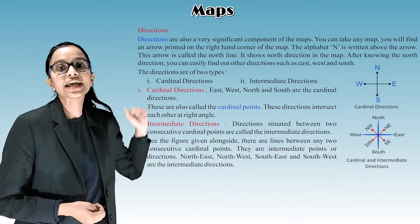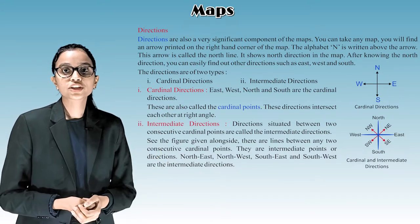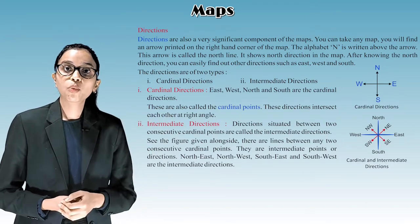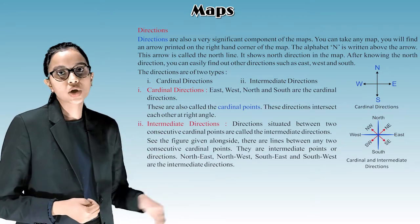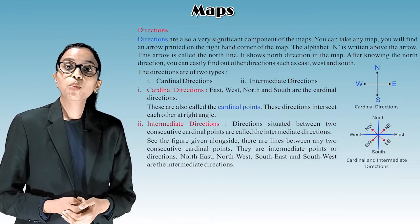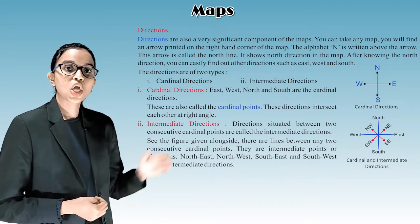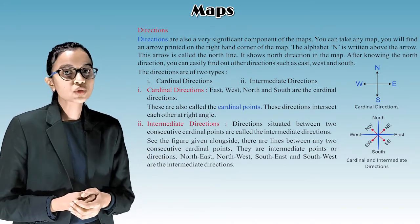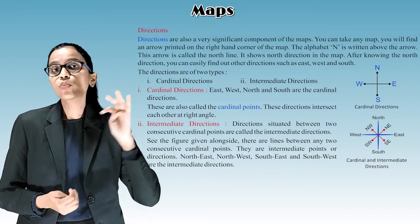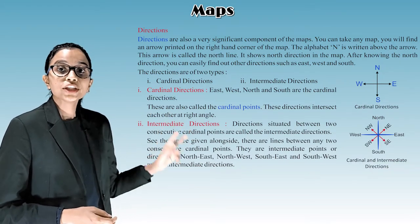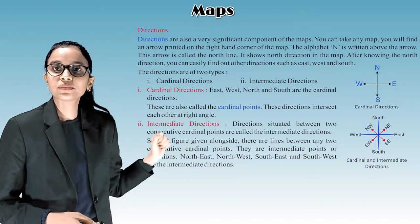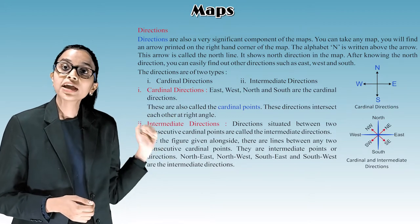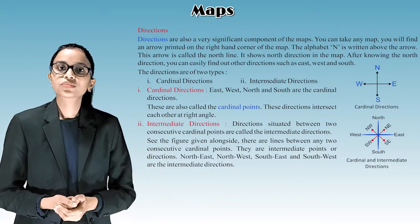And the second one is intermediate direction. So are you able to see how many intermediate directions there are? There are eight directions. Directions situated between two consecutive cardinal points are called the intermediate directions. See the figure given alongside. There are lines between any two consecutive cardinal points. They are intermediate points or directions. Northeast, northwest, southeast, southwest are the intermediate directions. So have you seen in the cardinal directions there were four directions, four points. But in intermediate directions between two cardinal directions there is one more direction. Like between north and west it is northwest. Between north and east it is northeast. Between west and south it is southwest. And between east and south it is southeast. So have you got it?